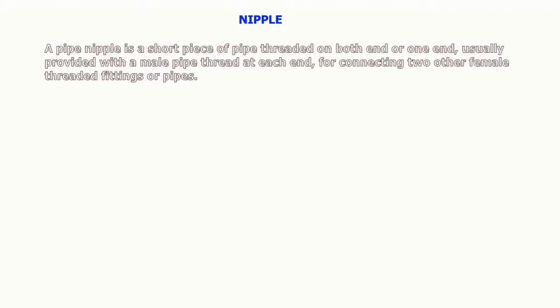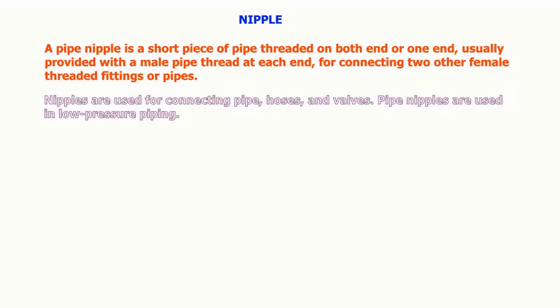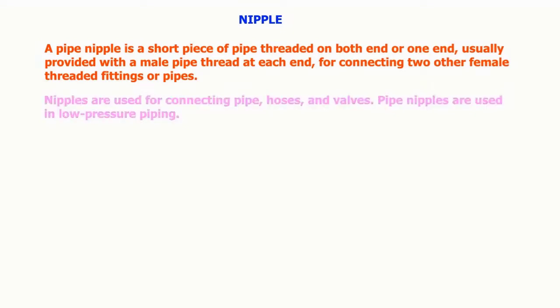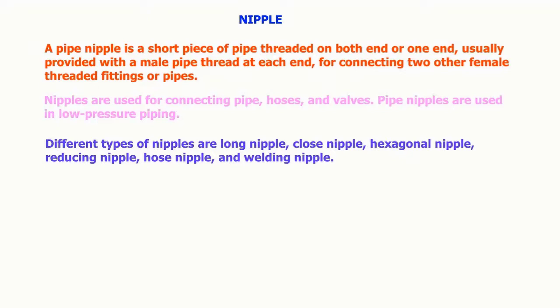A pipe nipple is a short piece of pipe threaded on both ends or one end, usually provided with a male pipe thread at each end for connecting two other female threaded fittings or pipes. Nipples are used for connecting pipe, hoses, and valves in low pressure piping. Different types of nipples are: long nipple, close nipple, hexagonal nipple, reducing nipple, hose nipple, and welding nipple.